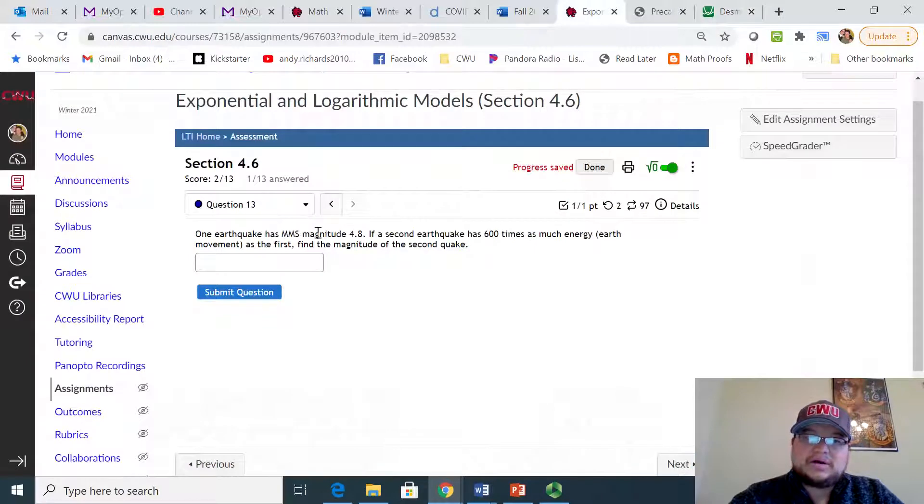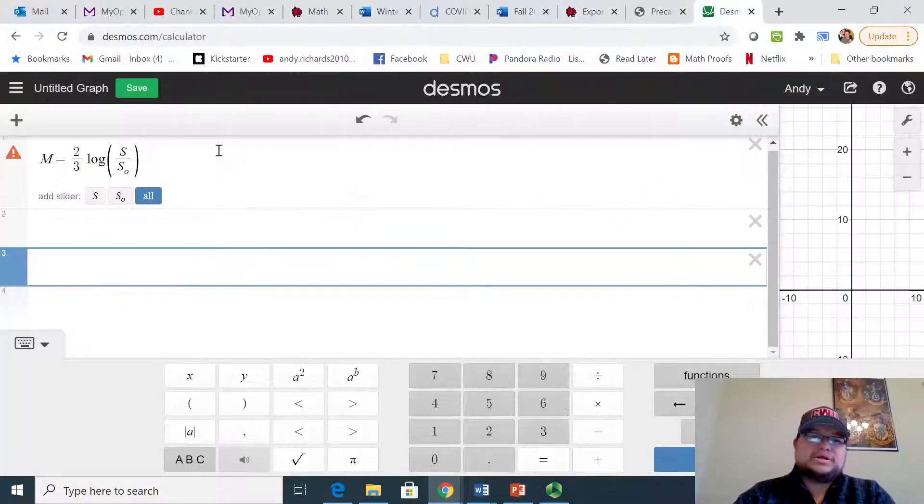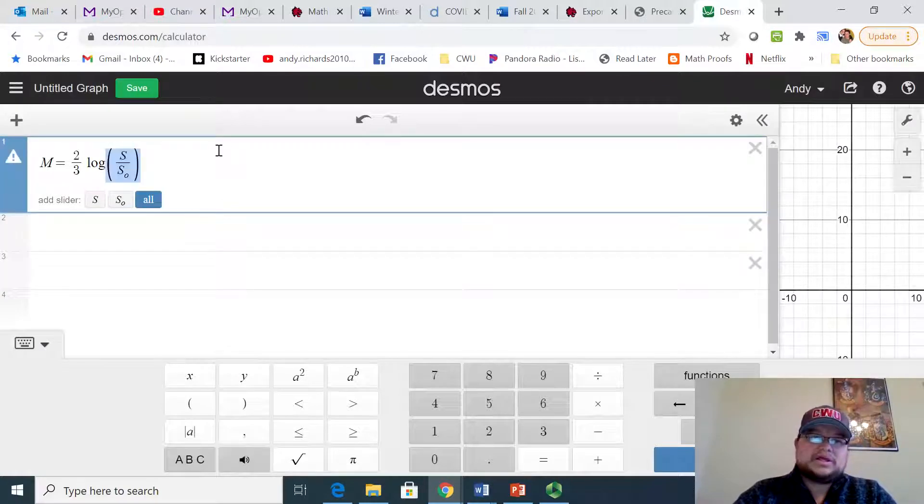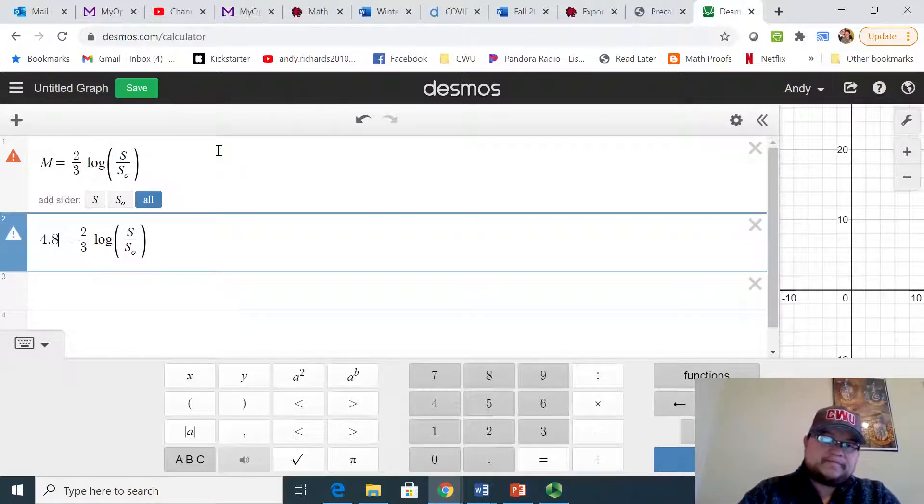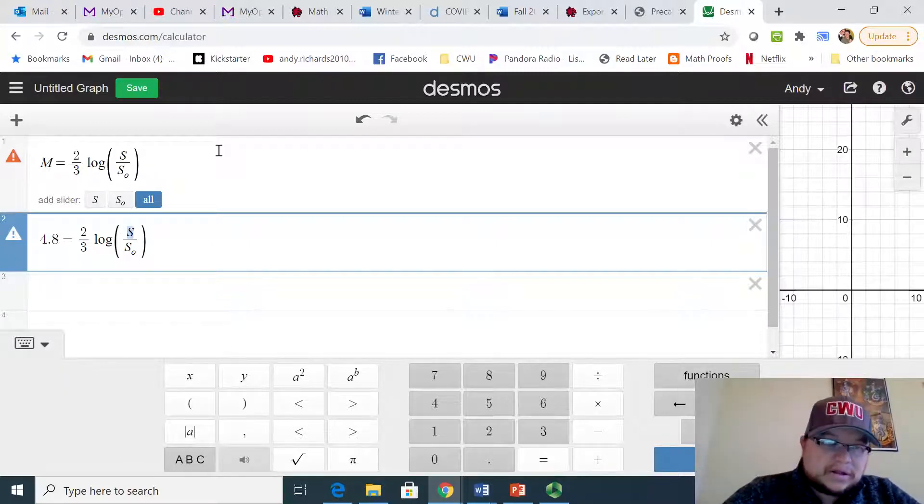In this case, our magnitude for the first earthquake is at 4.8, so essentially what we're doing is we're going to take this and we're going to replace M with 4.8, and the intensity is going to have to deal with this S here.